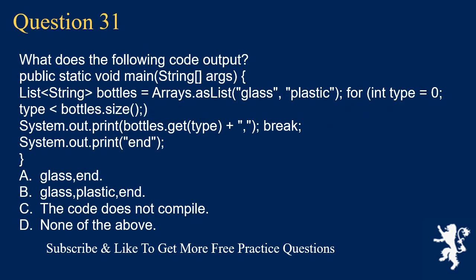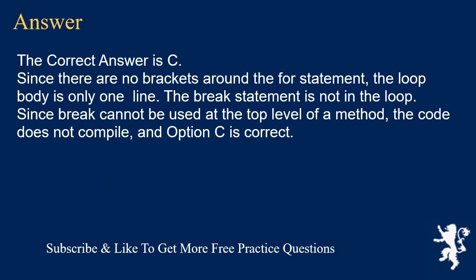Question 31. What is the following code output? A list (glass, plastic) is iterated with a for loop containing a break statement outside curly braces. A. glass end. B. glass plastic end. C. The code does not compile. D. None of the above. The correct answer is C. Since there are no brackets around the for statement, the loop body is only one line. The break statement is not in the loop. Since break cannot be used at the top level of a method, the code does not compile, and option C is correct.